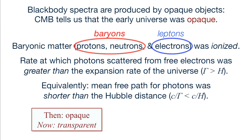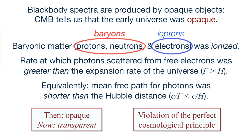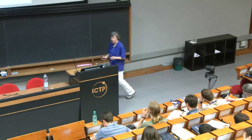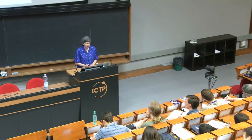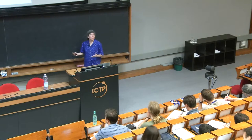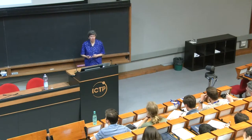Things have changed: back then the universe was opaque, now it's mostly transparent. This is a severe violation of the perfect cosmological principle, and it was the discovery of the cosmic microwave background in the mid-1960s that really made the hot Big Bang model the preferred model for cosmology. The steady-state model — in which the average density is constant because hydrogen atoms pop out of nowhere — was no longer favored after the mid-1960s.